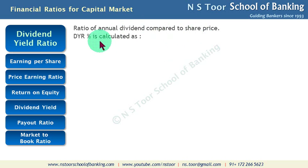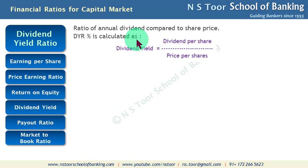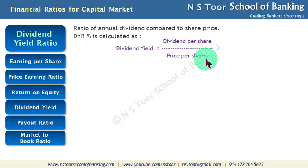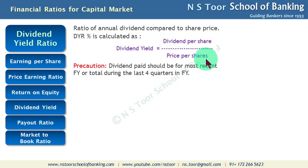This ratio is calculated as a percentage. The variables we need to calculate this ratio include Dividend Per Share divided by Price Per Share, where price means current price per share.